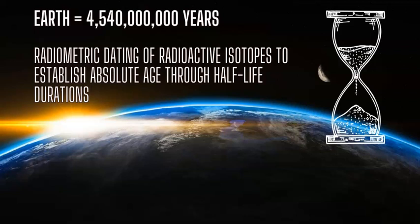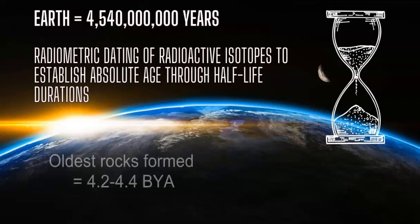By finding the oldest rocks — which are zircon rocks in Australia dating between 4.2 to 4.4 billion years — we work backwards to figure out the age of the Earth and how long it took to form those rocks. From this, we established an absolute age of about 4.54 billion years.